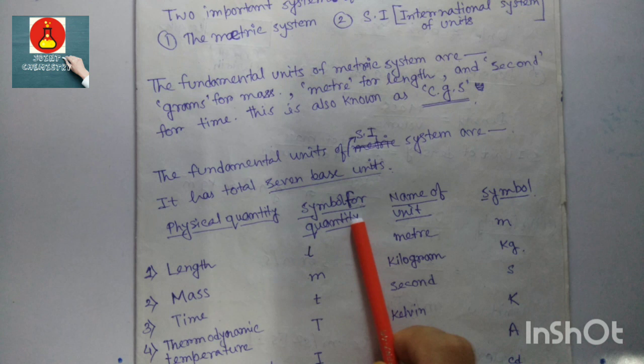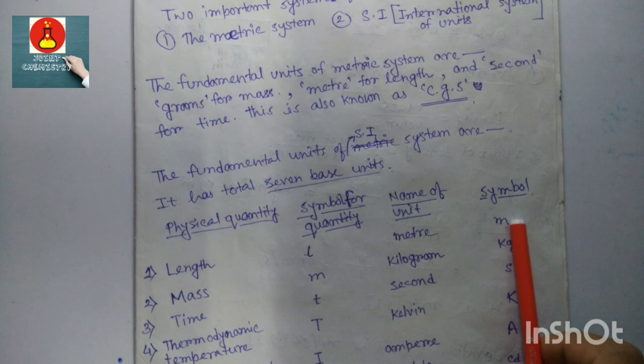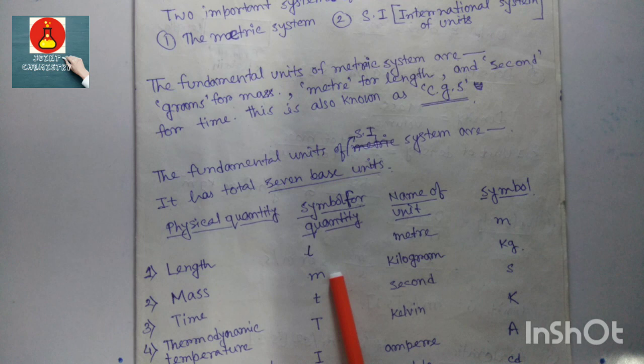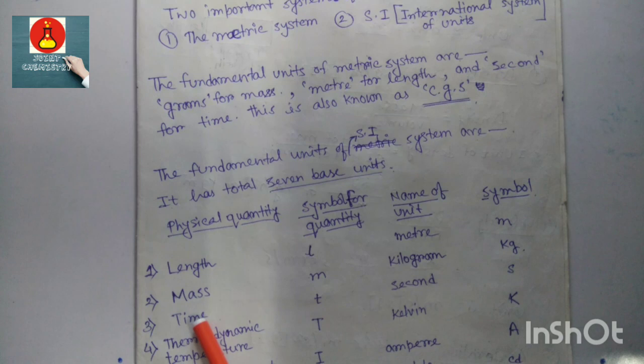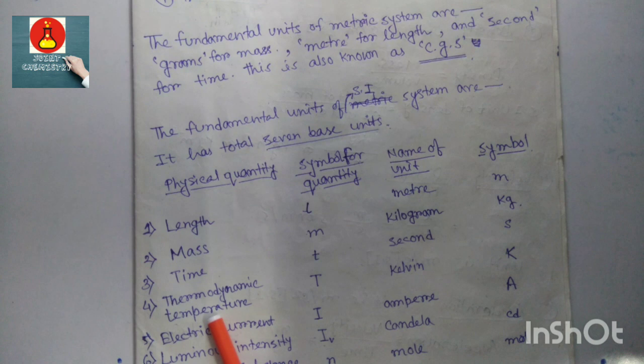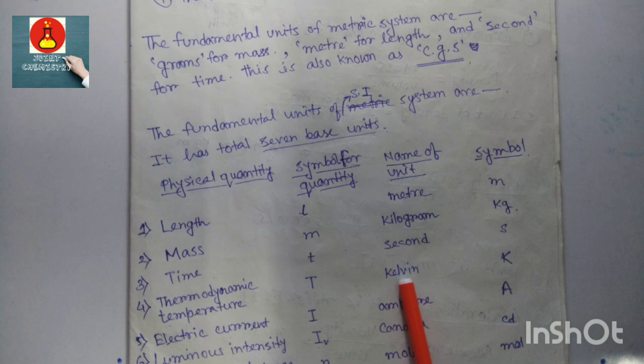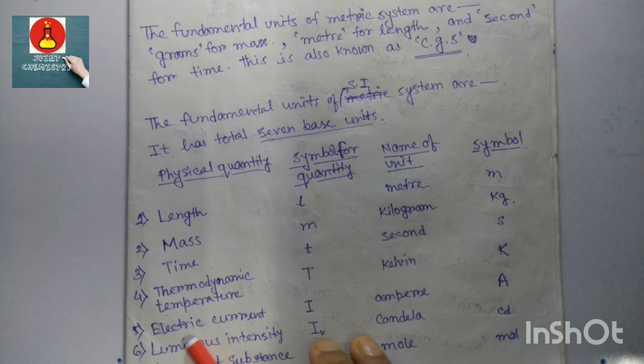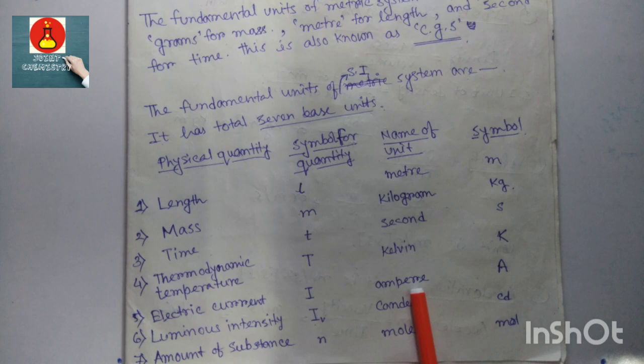The SI system has a total of seven base physical quantities. The first is length, with symbol small l, unit meter with symbol small m. Then mass, symbol small m, unit kilogram, symbol kg. Time, symbol small t, unit second, symbol small s. Then thermodynamic temperature, symbol capital T, unit Kelvin, symbol capital K. Then electrical current, symbol capital I, unit ampere, symbol capital A.